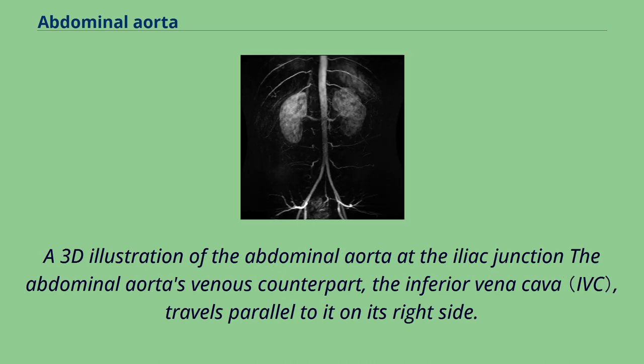A 3D illustration of the abdominal aorta at the iliac junction. The abdominal aorta's venous counterpart, the inferior vena cava, travels parallel to it on its right side.